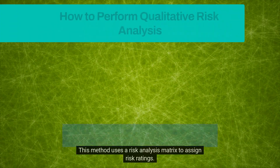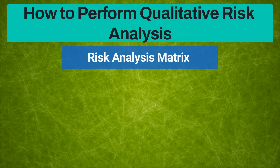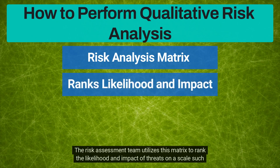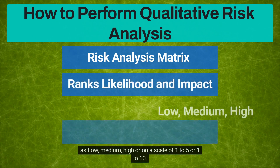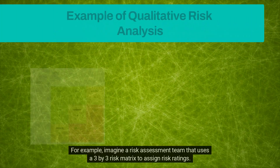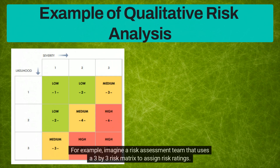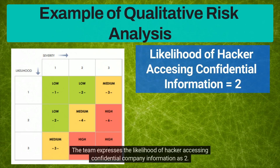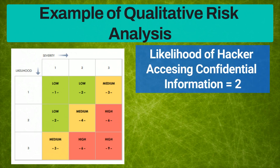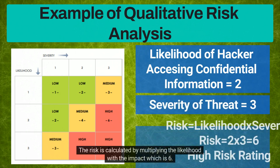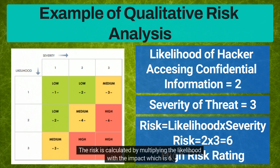The risk assessment team utilizes a risk matrix to rank the likelihood and impact of threats on a scale such as low, medium, high, or on a scale of one to five or one to ten. For example, imagine a risk assessment team that uses a three-by-three risk matrix. The team expresses the likelihood of a hacker accessing confidential company information as two. If this threat occurs, the impact or severity of the threat is three. The risk is calculated by multiplying the likelihood with the impact, which gives six.